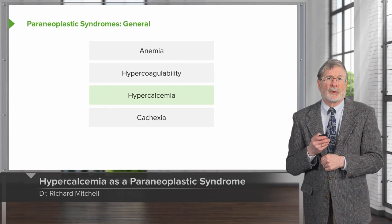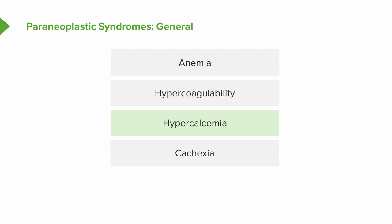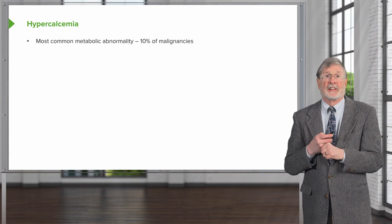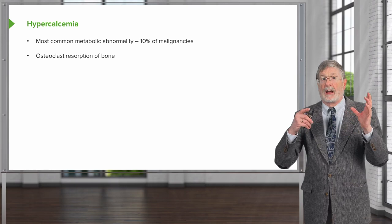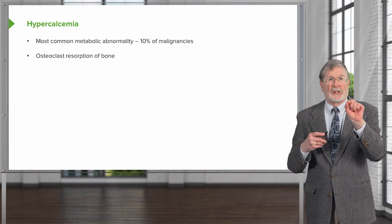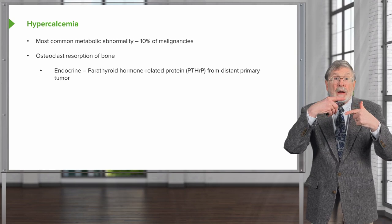Hypercalcemia is the next paraneoplastic process we're going to discuss. It is the most common metabolic abnormality that occurs in malignancy, and about 10% of malignancies will have some degree of hypercalcemia. This is mainly driven by the osteoclast being activated to resorb bone, and we'll talk about the mechanisms by which osteoclasts will be activated in the setting of malignancy.